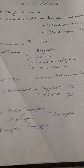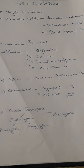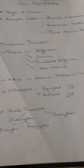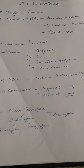The thickness of the cell membrane cannot be observed under the compound light microscope. Under the electron microscope it appears to be a trilaminar or tripartite structure, with an electron-dense dark layer on either side of a middle electron-transparent layer. Chemically the membrane consists of lipids, proteins, carbohydrates, and water.